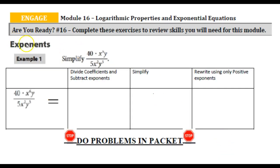All right, I hope you did that because we're moving right along to Are You Ready number 16, reviewing more exponents. So here you're given 40 times x to the sixth power times y, and 5 times x to the second power y to the fifth power on the denominator side. So the first thing we're going to do is we're going to divide our coefficients, which are these numbers here, 40 and 5. And then here we're going to subtract our exponents of like variables.